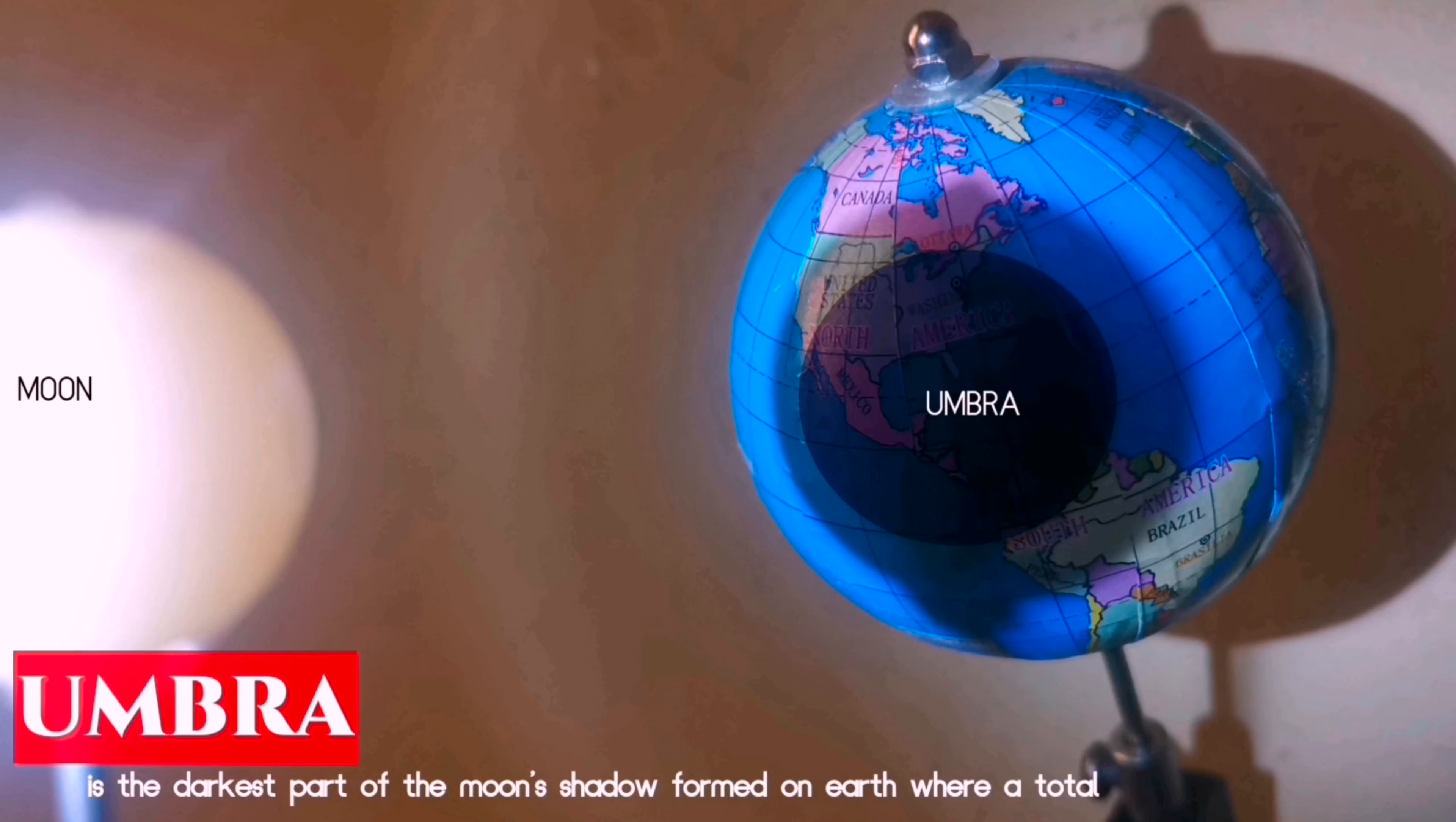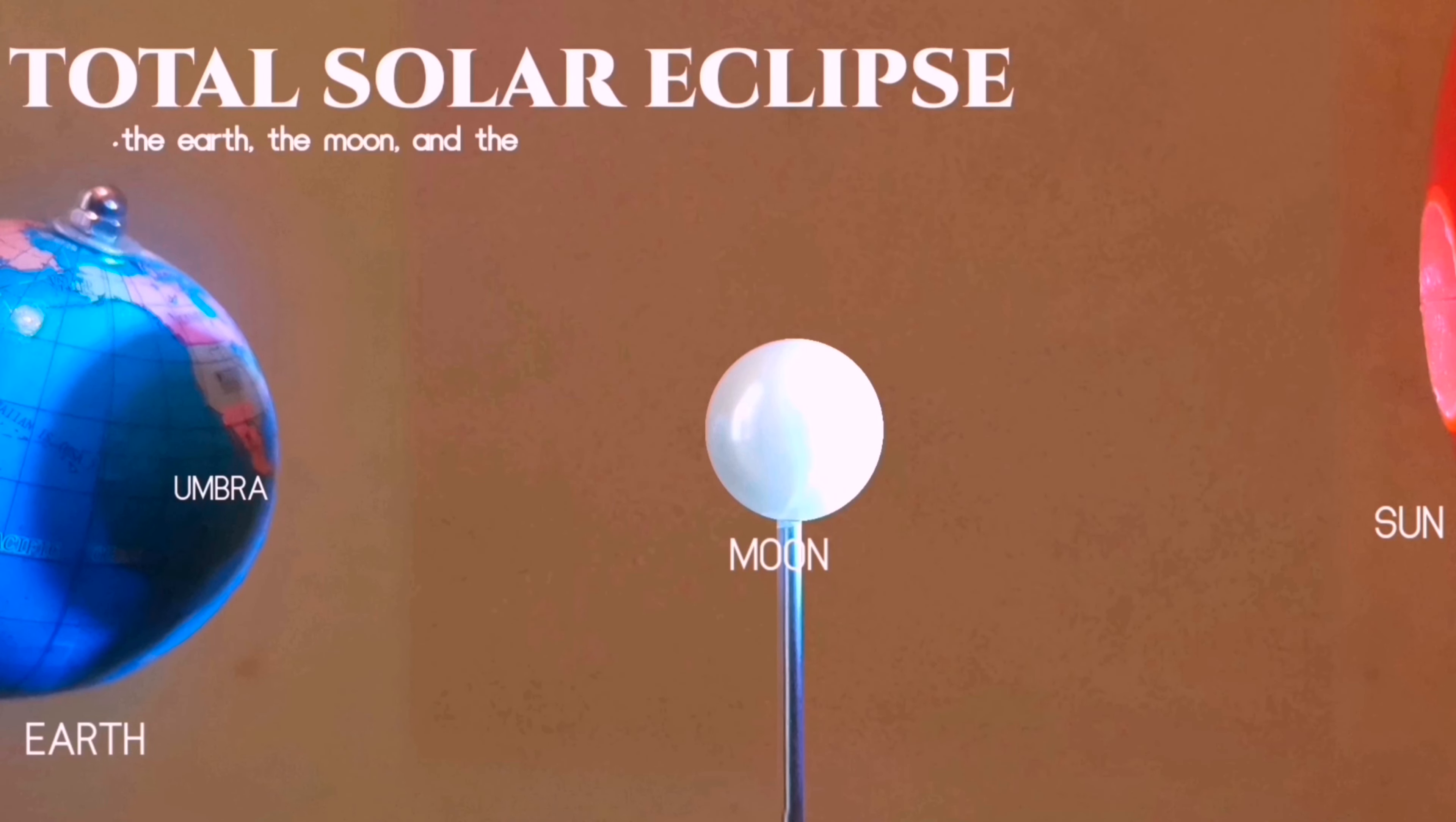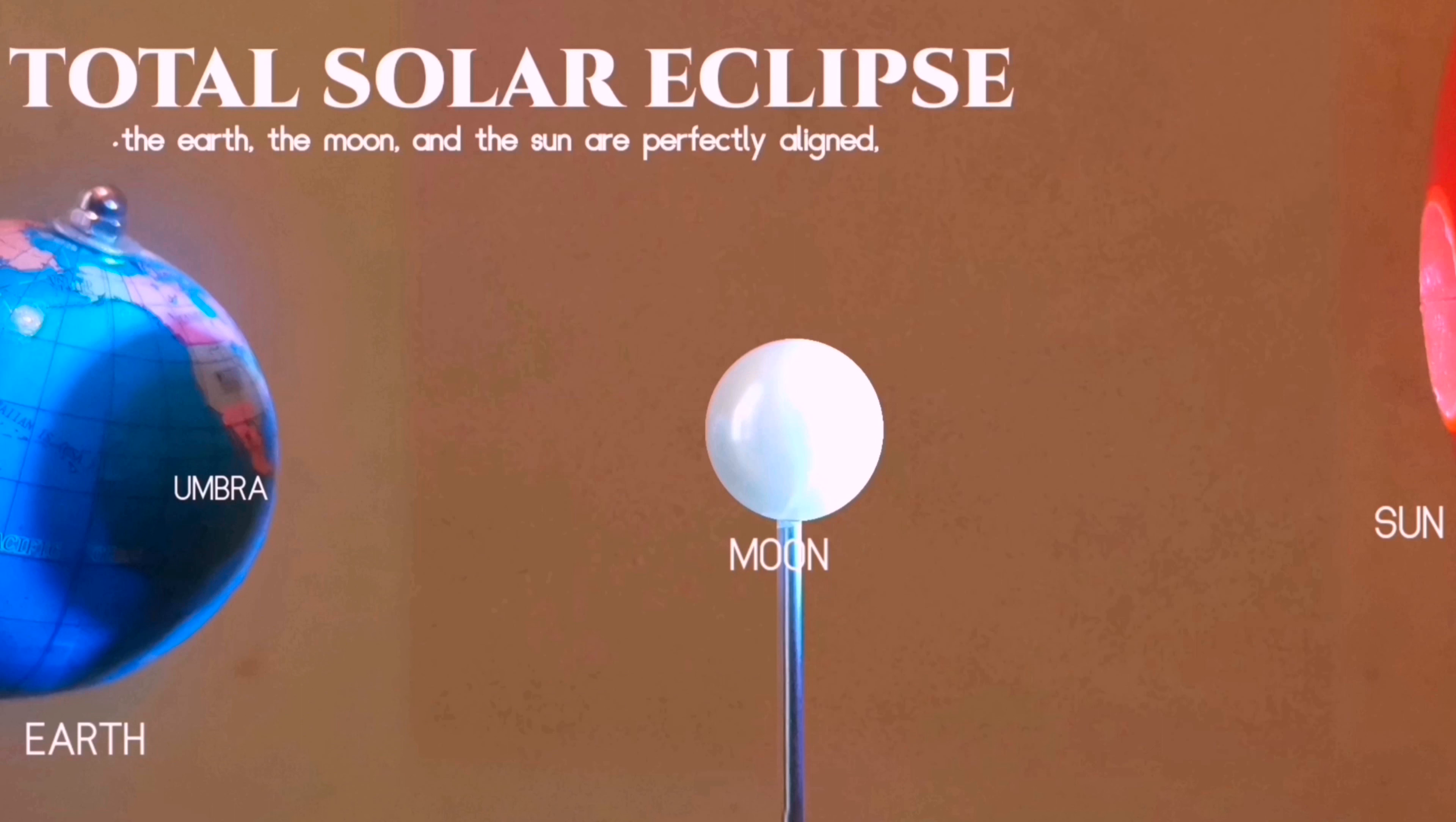The umbra is the darkest part of the moon's shadow formed on Earth where a total solar eclipse is visible. During total solar eclipse, the Earth, moon, and sun are perfectly aligned. It occurs when the light from the sun is blocked by the moon and the sky is dark as night.